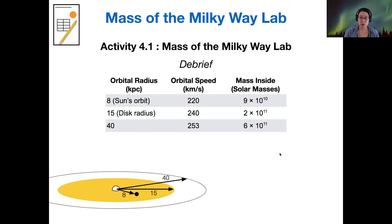So when we're looking at this table, there's a couple of special distances. So the sun's orbit at eight kiloparsecs, the edge of the visible extent of the disk at 15 kiloparsecs, and then 40 is just a number that we chose that was outside of the disk.